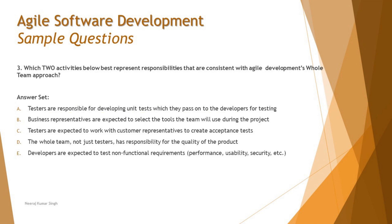Question 3 introduces a new question format for Agile certifications: unlike Foundation level with four options, Agile exams include two to three questions out of forty where you must select two correct answers. Partial credit is not awarded — you must get both correct for one point, otherwise you receive zero. This makes the question especially tricky.